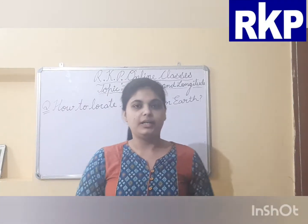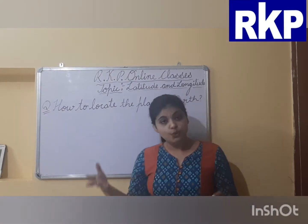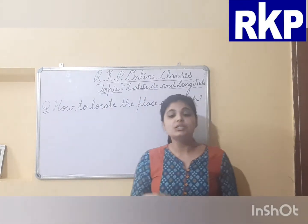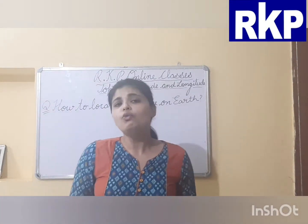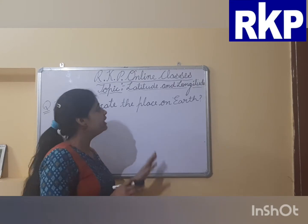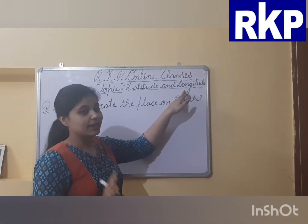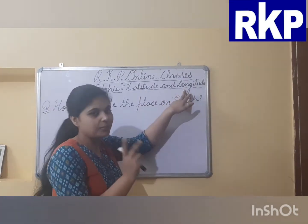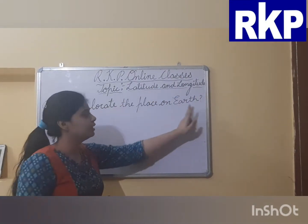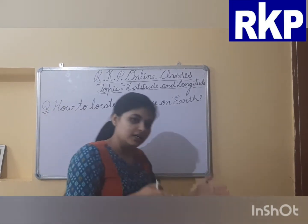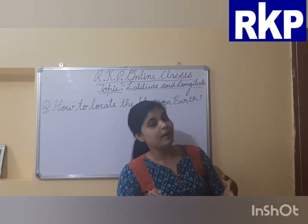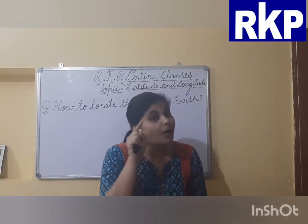A question will arise in your mind — how to locate a place on the earth? As I told you, with the help of latitude lines and longitude lines we can locate places on the earth surface. The answer is that with the help of these imaginary lines — latitude lines and longitude lines — we can locate any place on the earth. We draw imaginary latitude lines and longitude lines on the maps and the globes in order to find the absolute location.